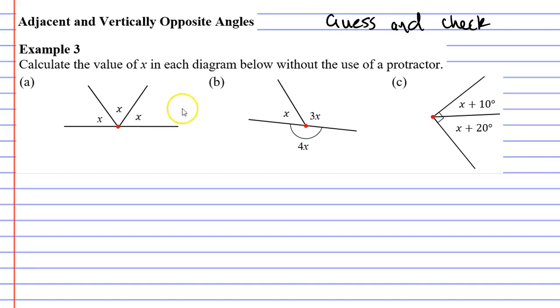Now if we look at question A you'll notice we've got a straight line which means that our angles should add up to 180 degrees. So let's guess a value for x. Let's say x is 40 degrees. If that is the case then all three angles should add up to 180 degrees. Let's check that. 40 plus 40 plus 40 equals 120 degrees. So we know that's wrong.